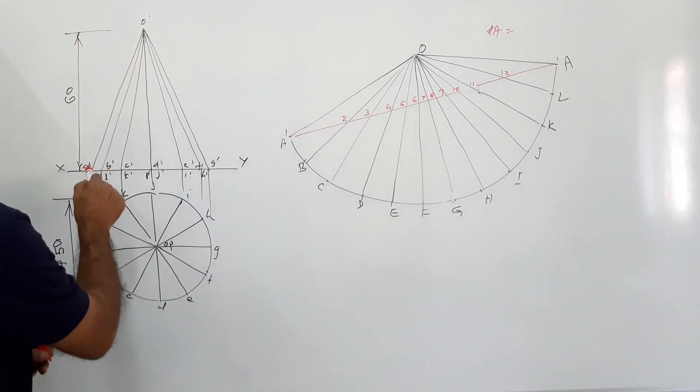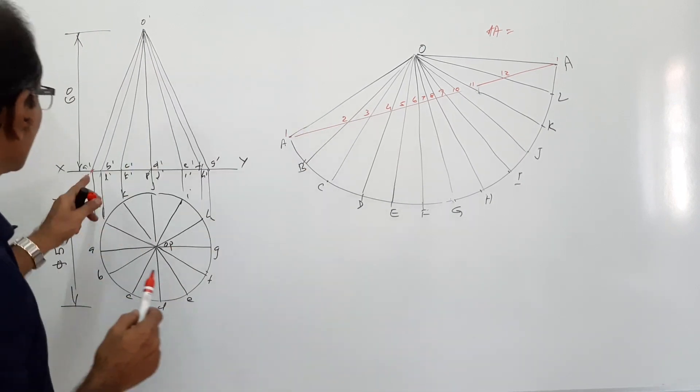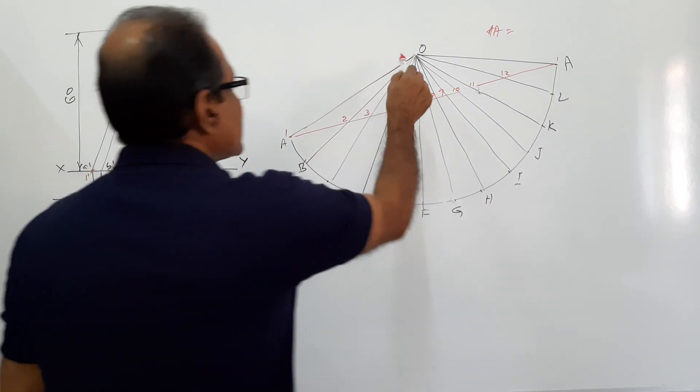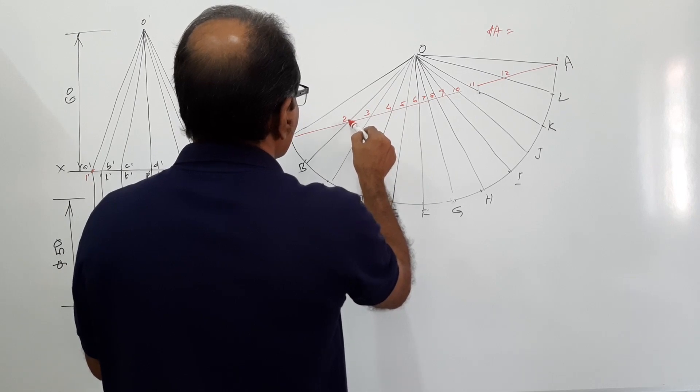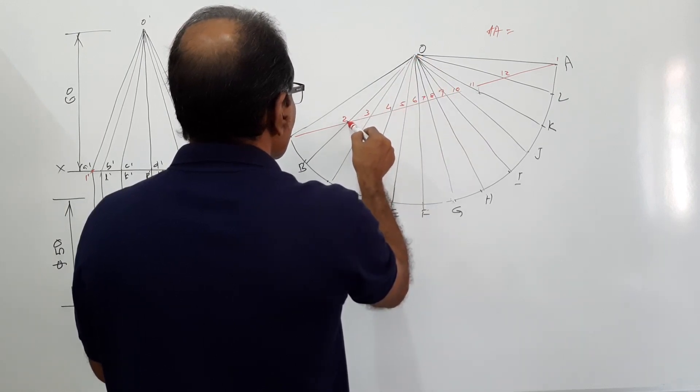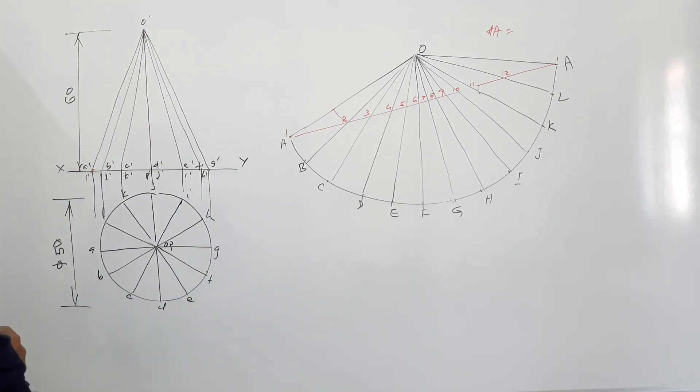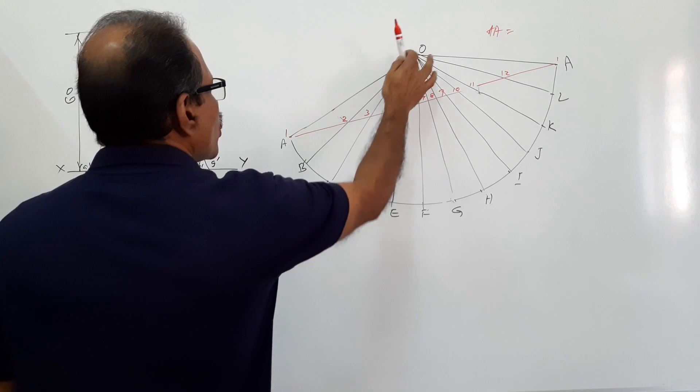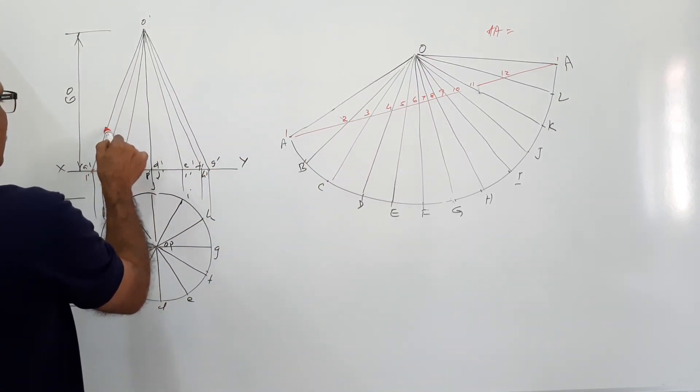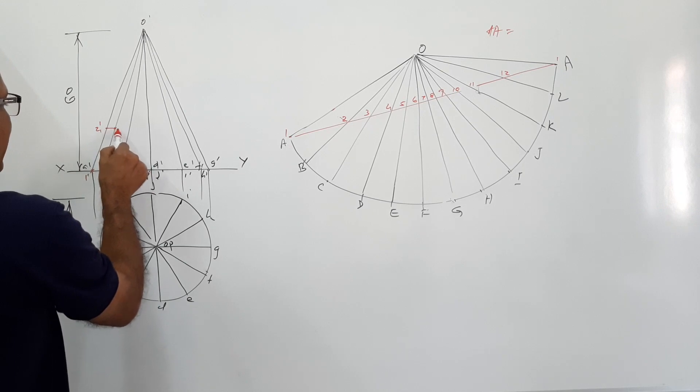Where is 2? 2 is on OB, so on this 1 dash B dash. You cannot take it because this is your true length. What you do? Take O 2 in your compass, mark on this true length 2-1 dash, draw a horizontal line to get 2 dash.